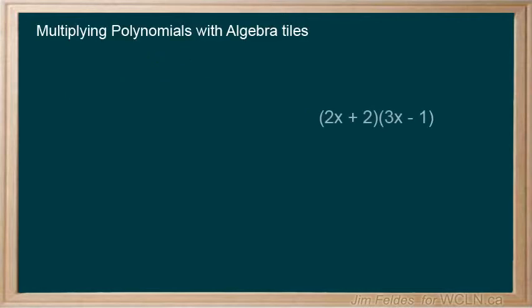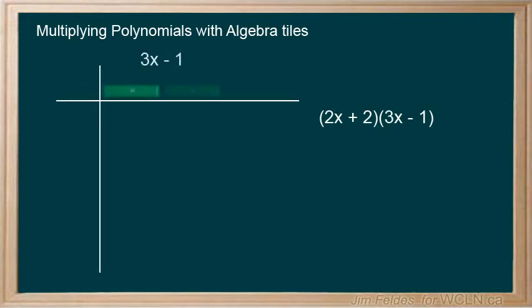Let's do one more example with a negative in one of the binomials. 3x minus 1 on the horizontal and 2x plus 2 on the vertical. Add our grid lines to guide the solution.